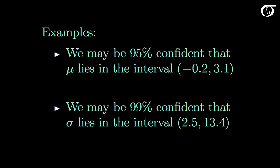For example, we may be 95% confident that the population mean mu lies in the interval -0.2 to 3.1, in which case the interval -0.2 to 3.1 would be a 95% confidence interval for mu. Or we may be 99% confident that the population standard deviation sigma lies in the interval 2.5 to 13.4, in which case 2.5 to 13.4 would be a 99% confidence interval for sigma.